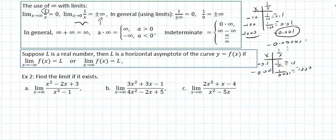So in general, when we are taking limits: if I am looking at a number over infinity plus or minus, we say that's 0. And if I look at a number over 0, that's infinity plus or minus.